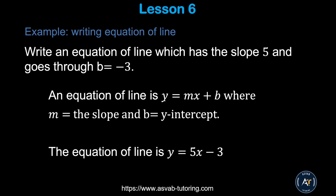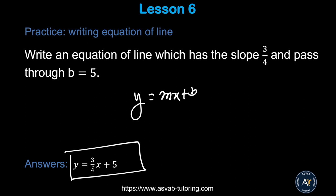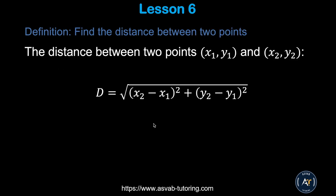Next, we'll learn how to write the equation of a line using slope and y-intercept. Using y = mx + b, plug in slope m = 5 and b = −3 to get y = 5x − 3. Now try the practice problem and make sure you get y = (3/4)x + 5.